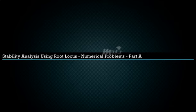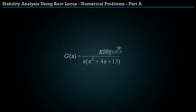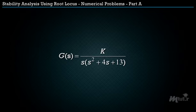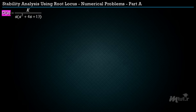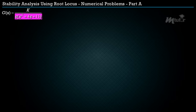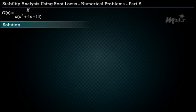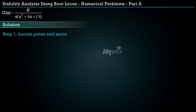Consider a unity feedback control system with open-loop transfer function G(s) = K / [s(s² + 4s + 13)]. Sketch the root locus of this system. Solution: first, locate the poles and zeros.